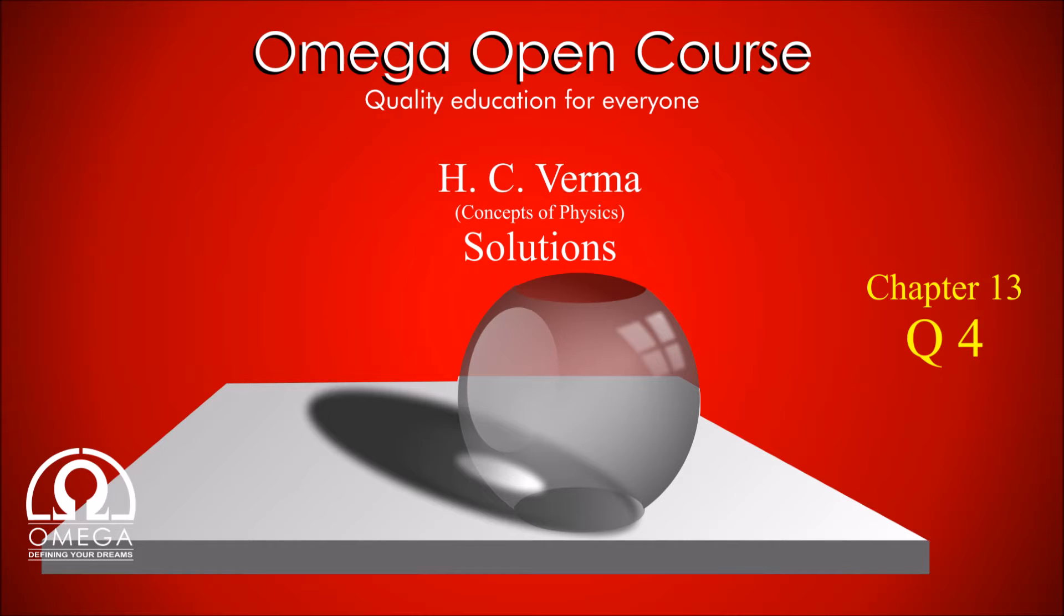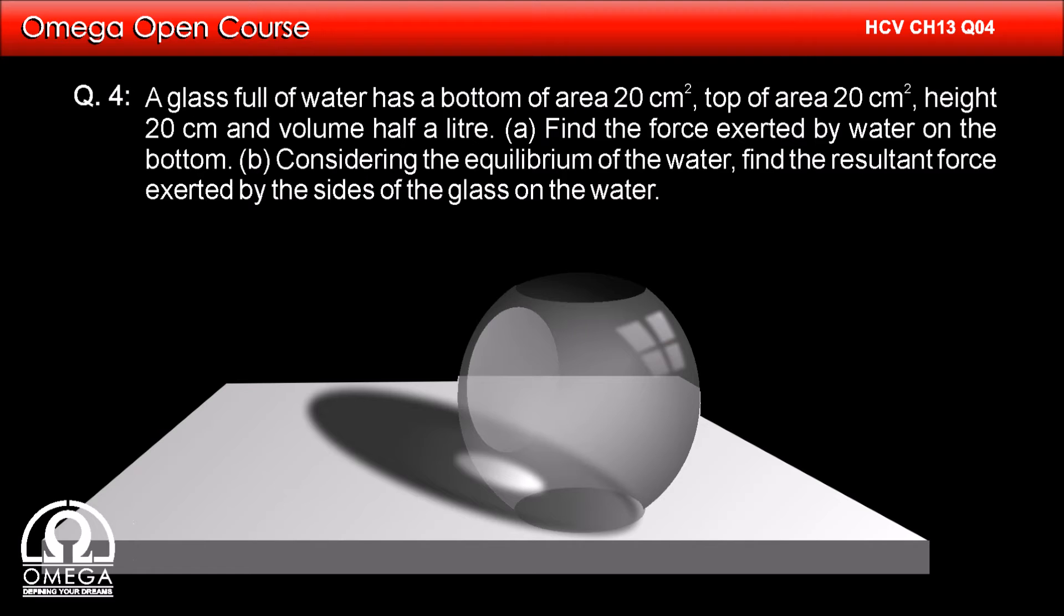H.C. Varma Chapter 13 Question Number 4. A glass full of water has a bottom area of 20 cm², top of area 20 cm², height 20 cm and volume half a litre.